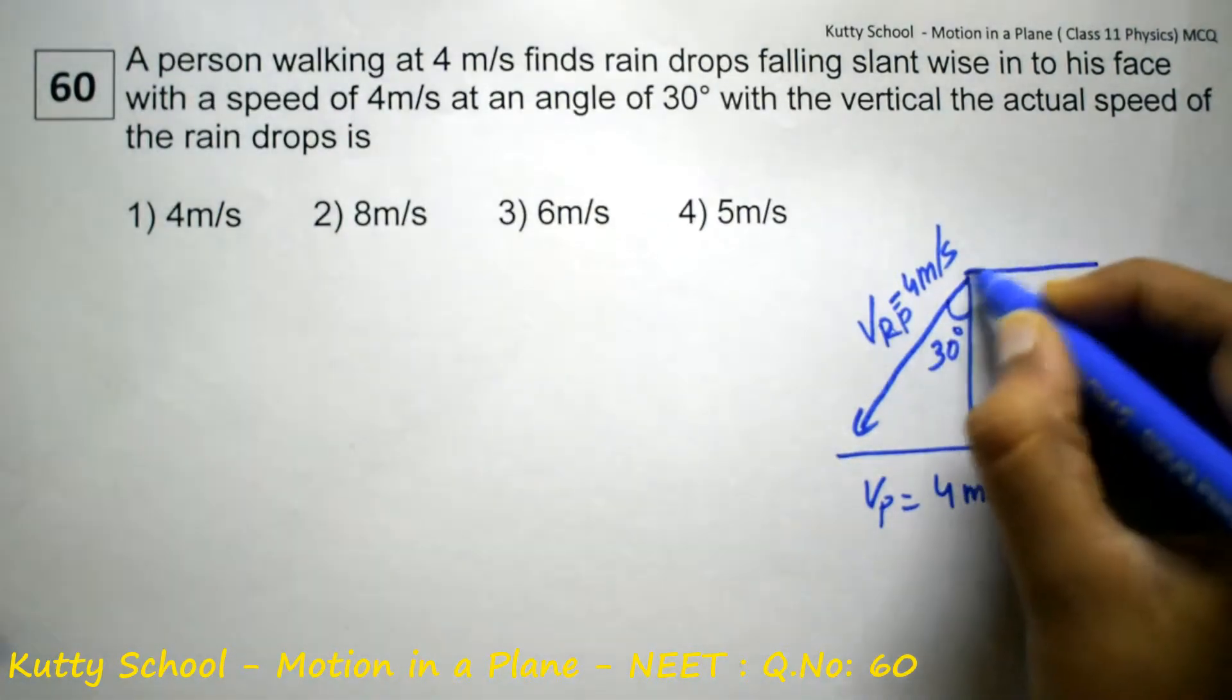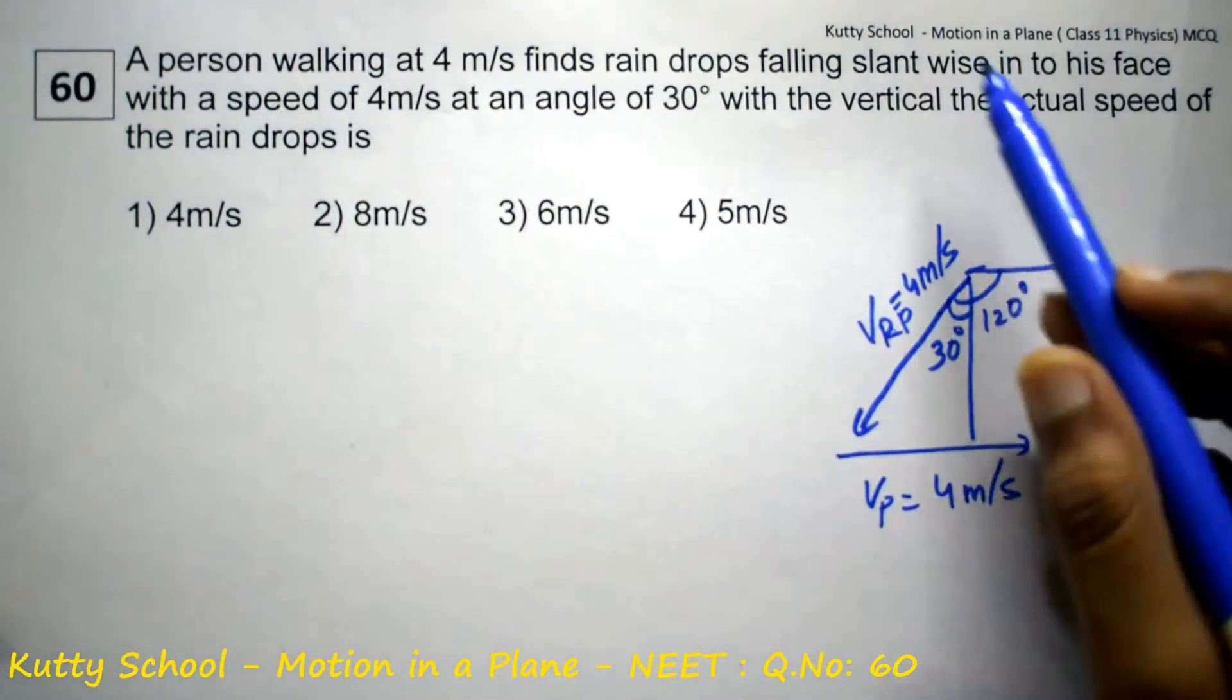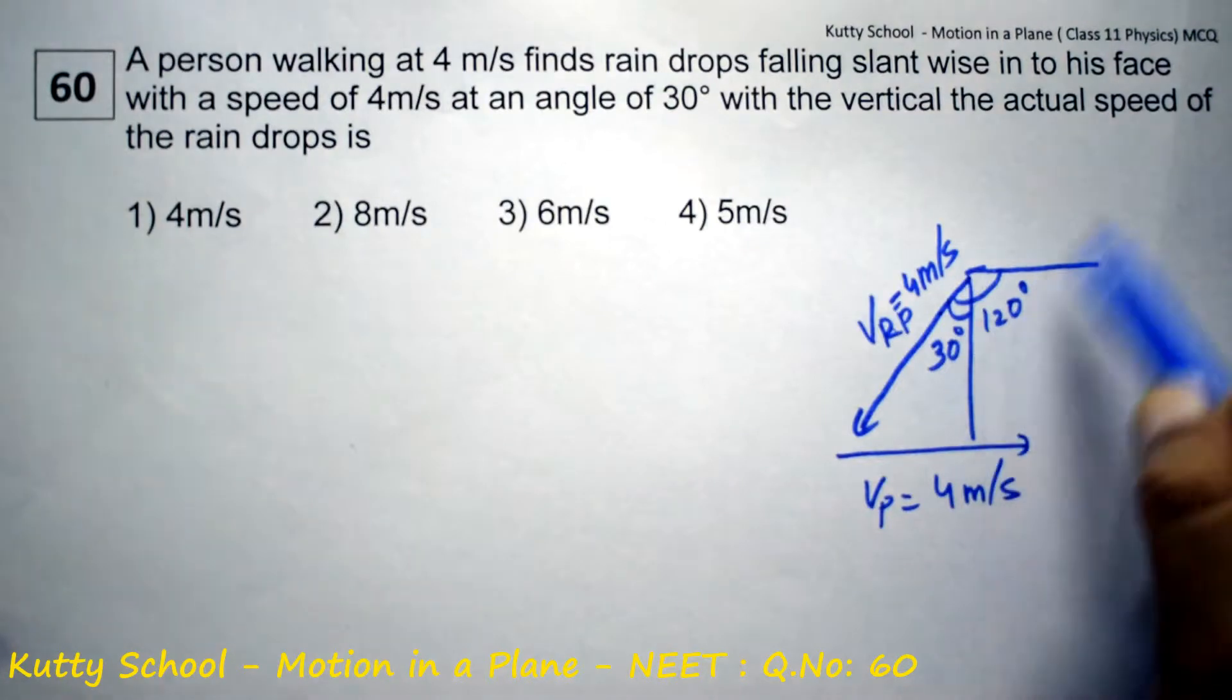It will become 120 degrees because it is 90 degrees plus 30 degrees equals 120 degrees.